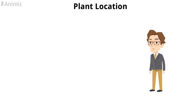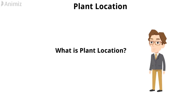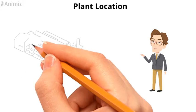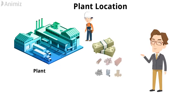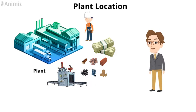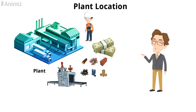What is plant location? Plant location is a place where men, money, material, machinery, etc. are brought together for manufacturing products.